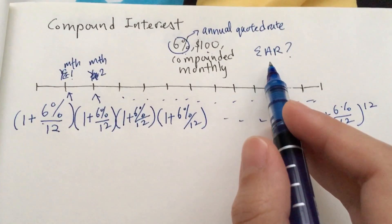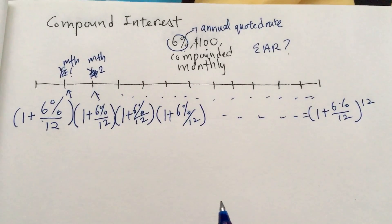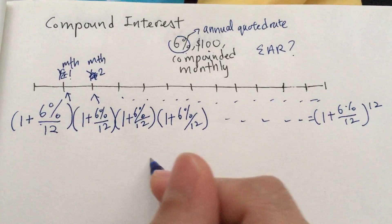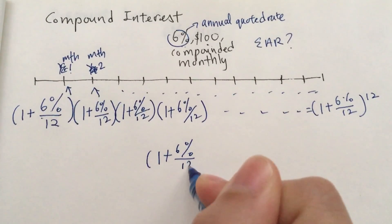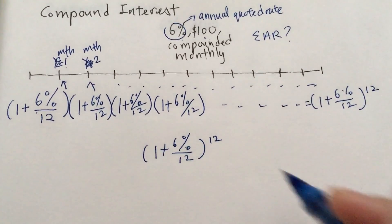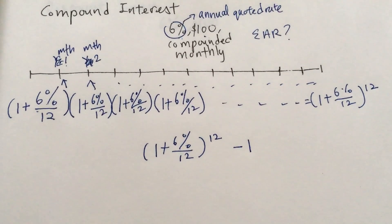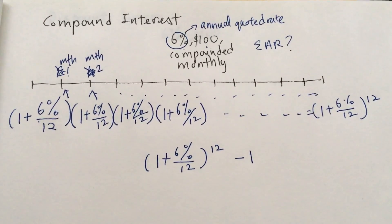So how do you find the effective annual rate? In order to find the effective annual rate, you take this 1 plus 6% divided by 12 to the power of 12, minus 1. And that will give you the percentage.